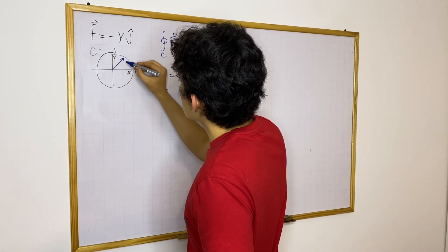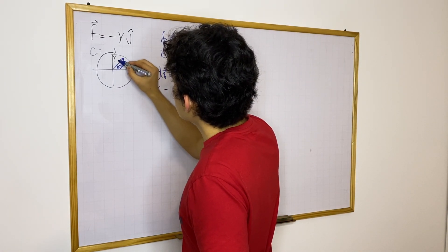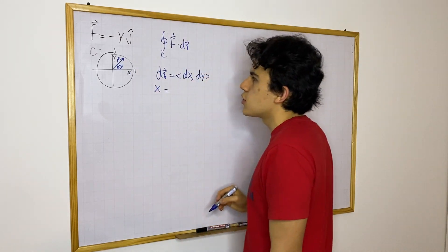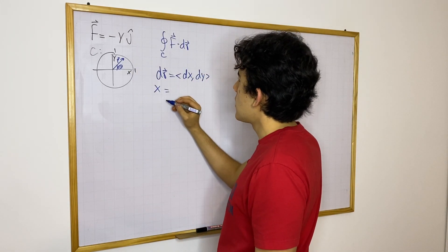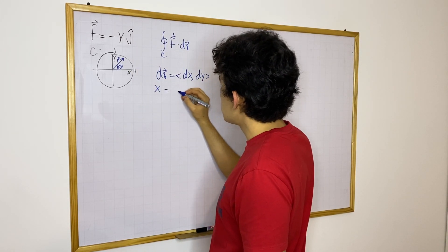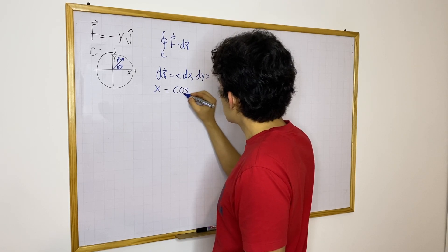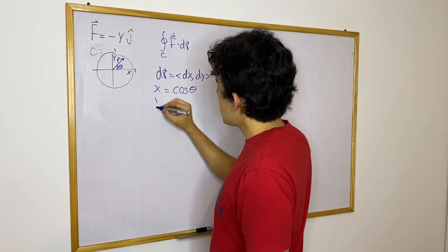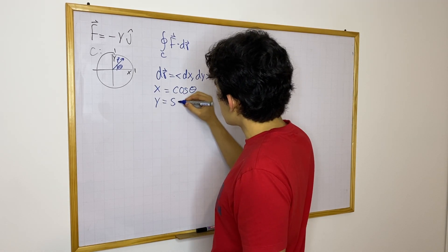So let's say we have this, this will be theta and this is r, the position vector. So then let's say x will be simply cosine theta and y would be sine theta.